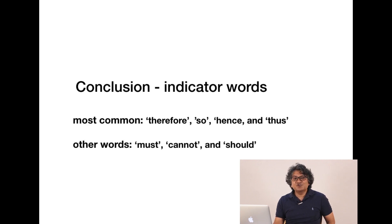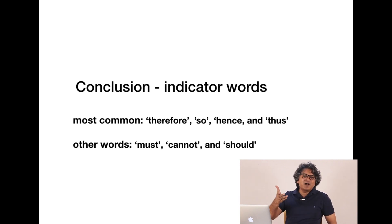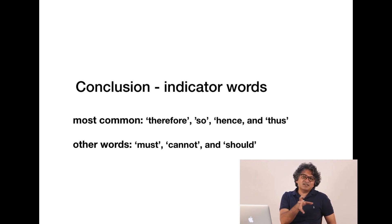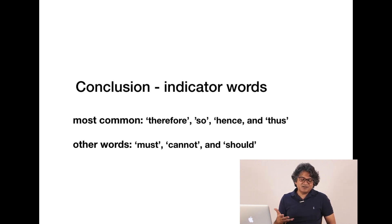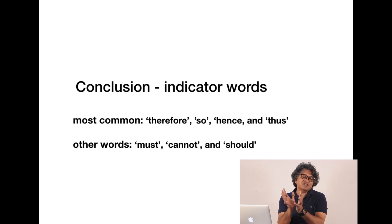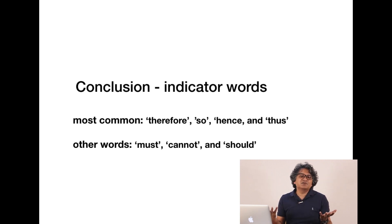Some more conclusion indicator words would be: 'must,' 'cannot,' 'should,' 'should not.' Just think about it — when you're trying to form some sort of an argument, meaning when you are trying to come up with a claim with the help of some data, what kind of words will you use for the premises and for the conclusion? That is the key thing.